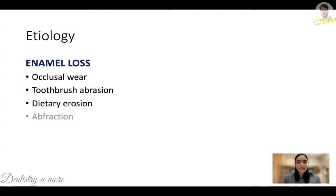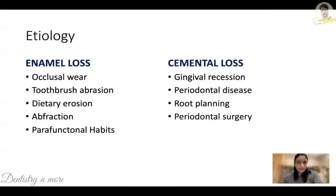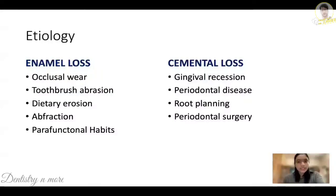The etiology of dentin hypersensitivity can be mainly divided into two categories: enamel loss or cemental loss, both of which result in exposure of the dentin. Enamel loss can happen due to occlusal wear, toothbrush abrasion, dietary erosion, abfraction, parafunctional habits, and many more. Cemental loss mainly occurs due to gingival recession and periodontal disease, and can also occur due to iatrogenic reasons after root planing or periodontal surgery.